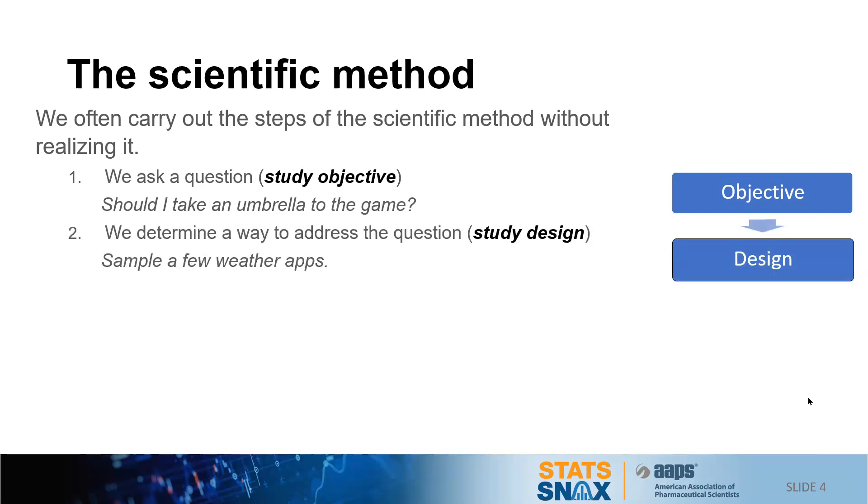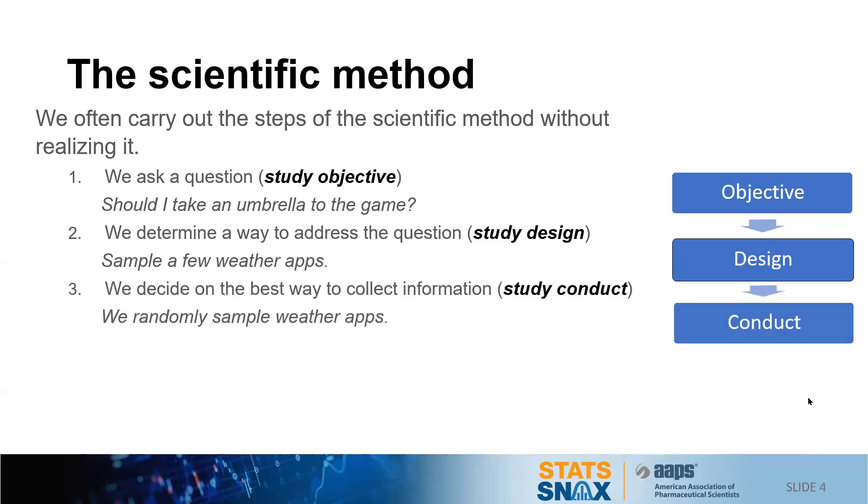We follow by designing a study or determining how to address the question, such as sampling a few weather apps. We might be conscious of the rumors that some of the weather apps are owned by umbrella companies, and therefore we may want to randomize, which is part of study conduct.